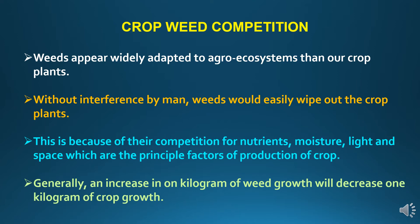Weeds are widely adapted to agro-ecosystems compared to crop plants. Without interference by humans, weeds would easily wipe out the crop plants. So weed management is compulsory needed to get the desired yields from cultivation. This is because of their competition for nutrients, moisture, light, and space, which are the principal factors of production of crops. Generally, an increase of 1 kg of weed growth will decrease 1 kg of crop growth.